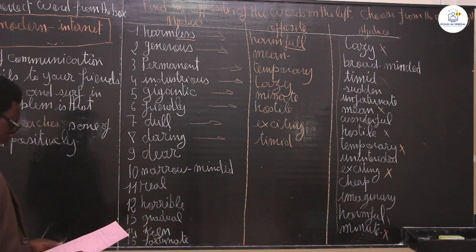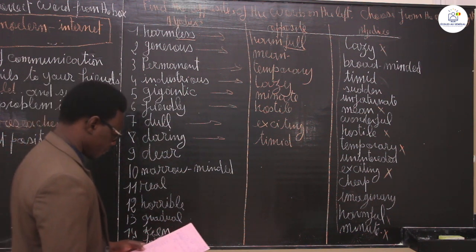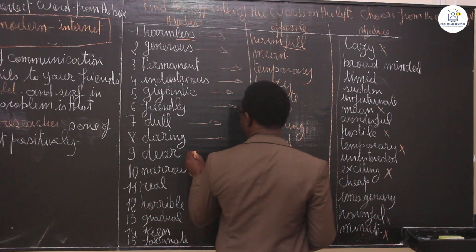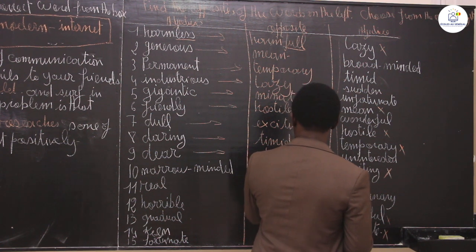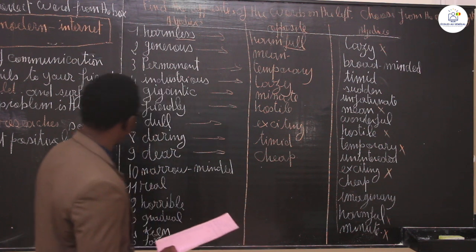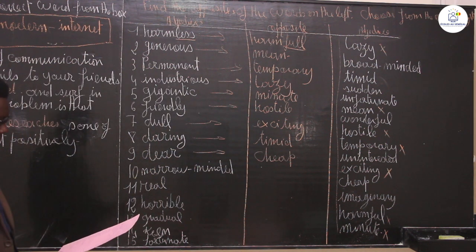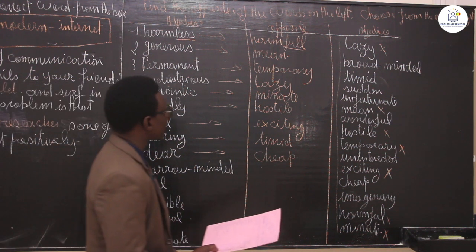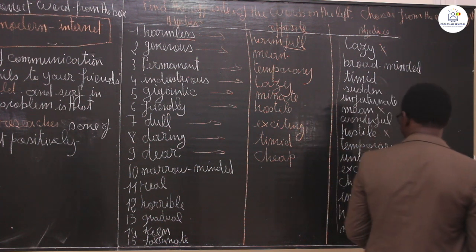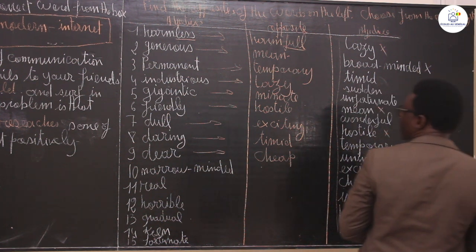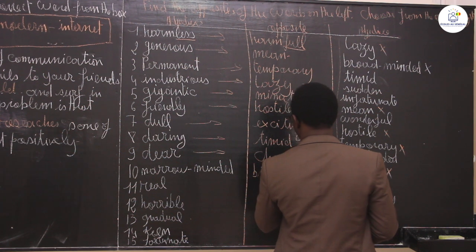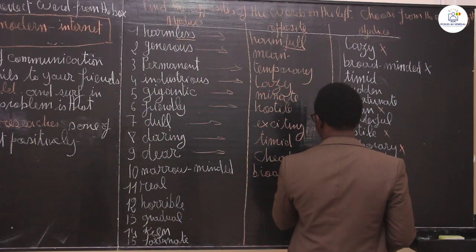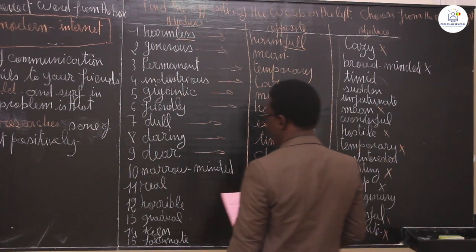You have the word dear. The contrary of dear is cheap. Then you have narrow mind — the contrary of narrow mind is broad mind.